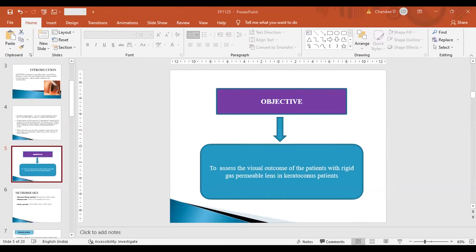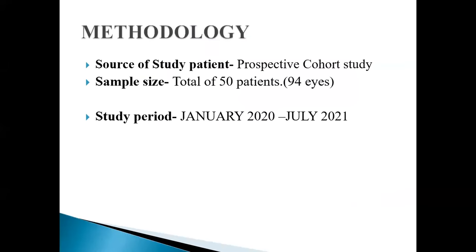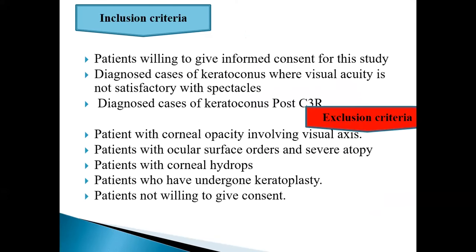Presentation is fine. You can start then. We'll see. The main objective of the study is to assess the visual outcome of patients with rigid gas permeable contact lenses in keratoconus patients. It's a prospective cohort study. Total number of patients are 50, 94 eyes. Study period is between January 2022 to July 2021. Inclusion criteria: patients willing to give informed consent, diagnosed cases of keratoconus where visual acuity is not satisfactory with spectacles, and diagnosed cases of keratoconus post-CXL. Exclusion criteria: patients with corneal opacity involving visual axis, patients with ocular surface disorders and severe atrophy, patients with corneal hydrops or who have undergone keratoplasty, and patients not clinically cooperative.